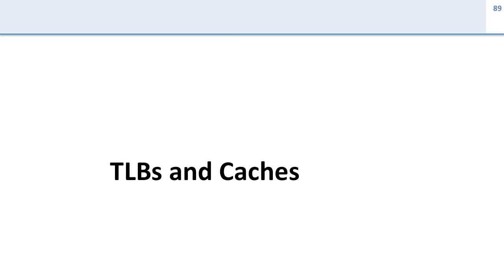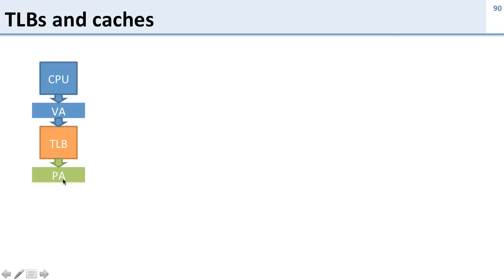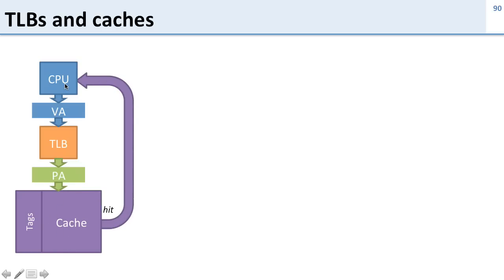Now let's see how TLBs and caches interact. Since they both have to do with accessing data and addresses, they're pretty tightly coupled. There are basically two ways to put TLBs and caches together. The CPU generates a virtual address, which goes into the TLB to get a physical address. Then that physical address goes into the cache — on a hit, we return the data to the CPU; on a miss, we go to memory. This is called a physical cache because our cache uses a physical address.